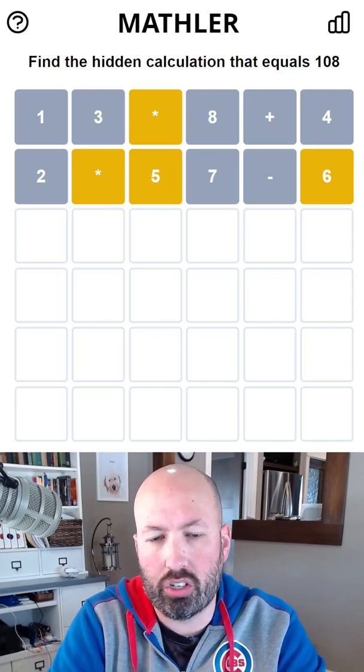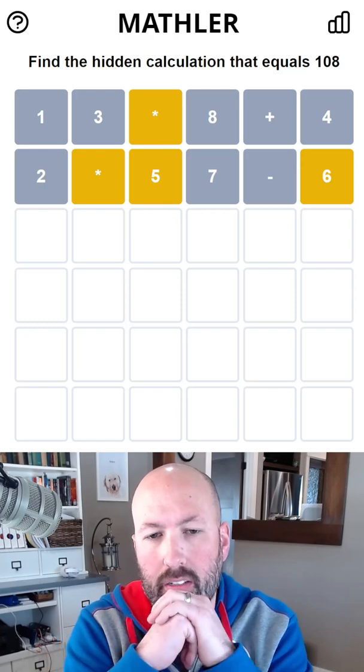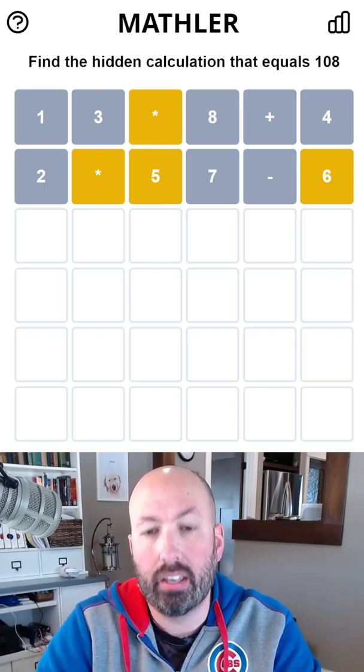Okay, so we don't have addition or subtraction, so we think we're gonna have to multiply and then divide, probably. Except the multiplication can't be at the beginning, so we've gotta divide and then multiply.